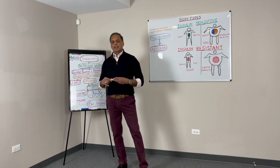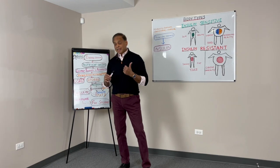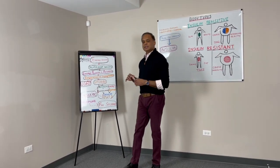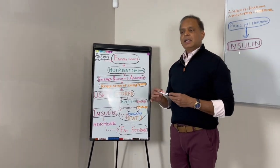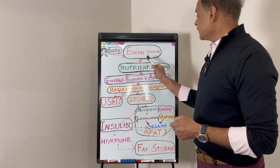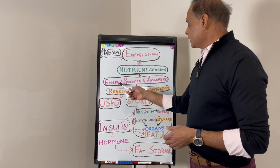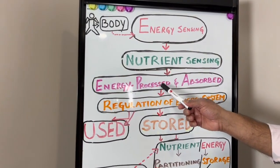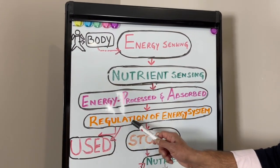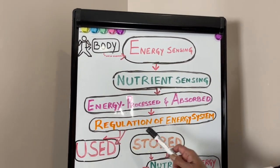My purpose of talking about this specific point today is for two particular reasons — it has both practical significance and clinical significance. From a practical standpoint, I want to bring in the concept of energy in the body, because everything that we consume is in the form of energy. The body actually senses energy, and that energy is nothing but the nutrients we are sensing from the environment. That nutrient sensing leads to energy that is ingested and digested — what we call energy processing — and then it is absorbed, leading to the regulation of the energy system: whether energy has to be used or stored.